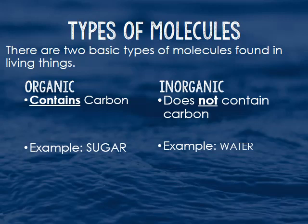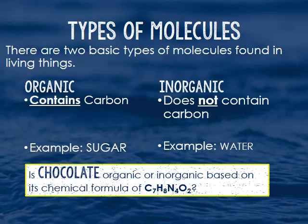Think of what you know of chemical formulas from past science classes. Sugar is C6H12O6; water is H2O. You can tell right away which one is organic and which one is inorganic. Now, is chocolate organic or inorganic? The chemical formula of chocolate is C7H8N4O2. If you said organic, you are correct, because it contains carbon.